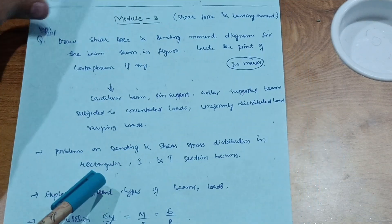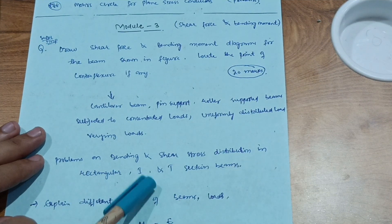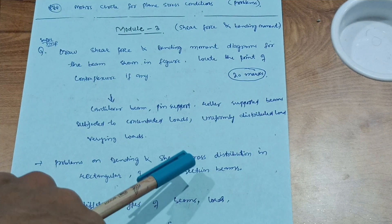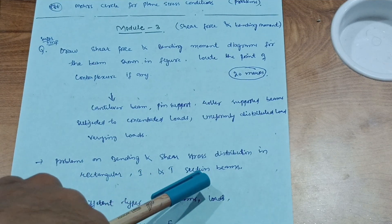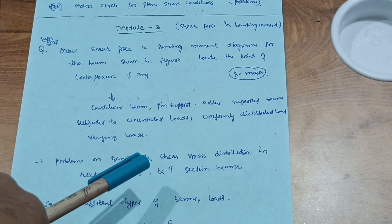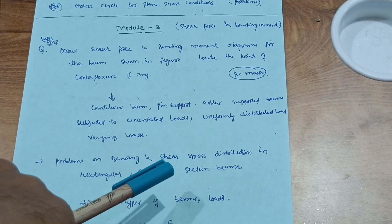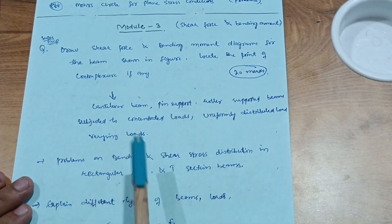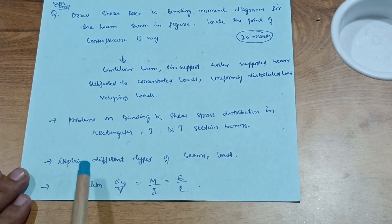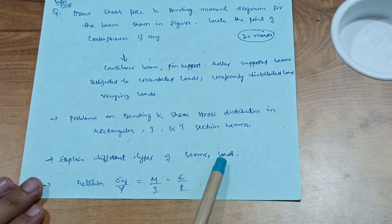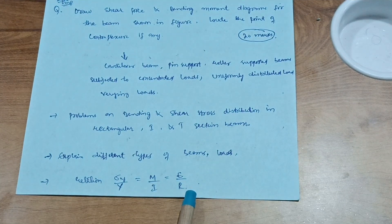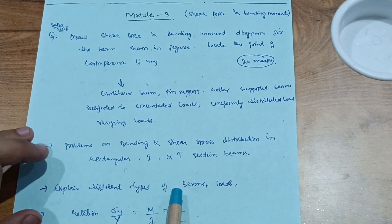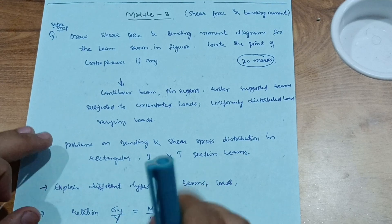Drawing SFD and BMD is a lengthier but manageable question — you should know these diagrams well. Also cover problems on bending and shear stress distribution in rectangular, I, and T section beams, as exams sometimes ask two 10-mark questions from this module. Additionally, cover theory concepts like types of beams and loads, and the bending equation: σ/y = M/I = E/R. This content is enough to secure 20 marks from Module 3.